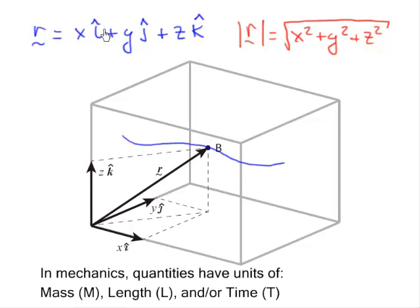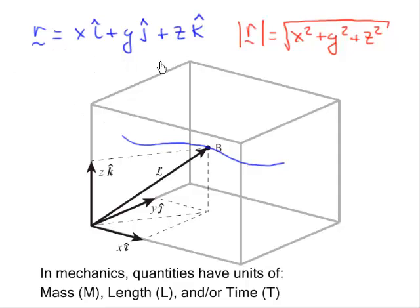Before going on, it's worth reiterating that in mechanics, any quantity we write down has units of mass, length, or time — or some combination of two, or even all three of these. My first question to you: take a short break and think about it for a second — what are the units associated with position here?